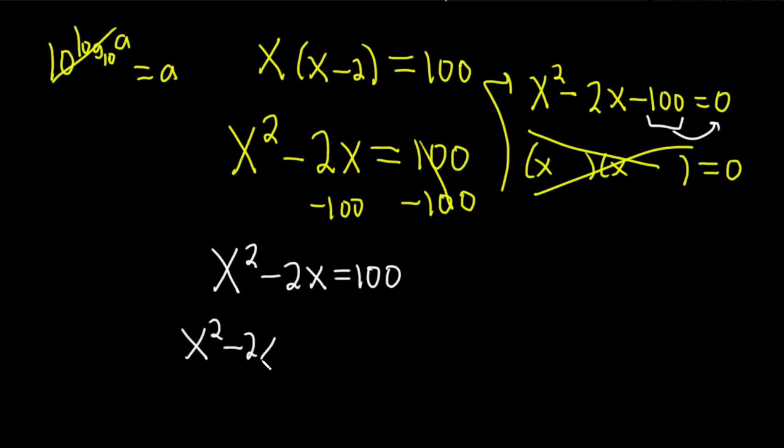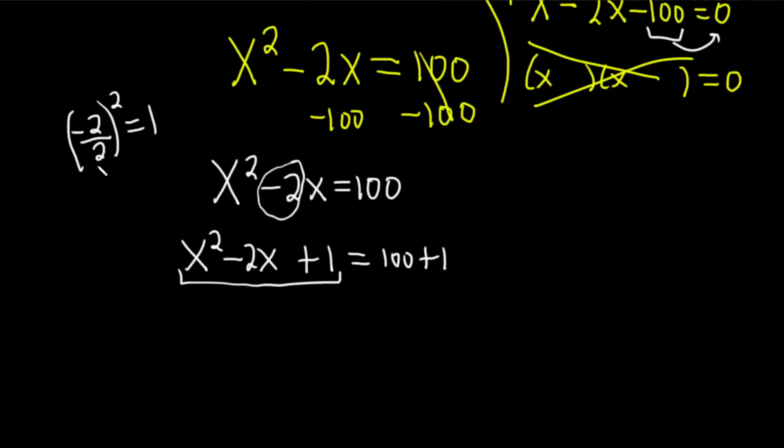x squared minus 2x. So what you do here is you take this number, you divide it by 2, and you square it, and you add it to both sides of the equation. So you do negative 2 over 2, you square it, and that's 1. So you put a plus 1 here. But what you do to one side, you have to do to the other, so this is 100 plus 1. And now this is called a perfect square trinomial. It will always factor. Because we added this quantity to both sides of the equation, and particularly we added it to this side, we completed the square. So this becomes a perfect square.